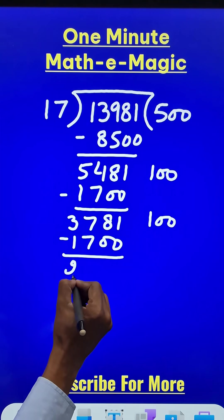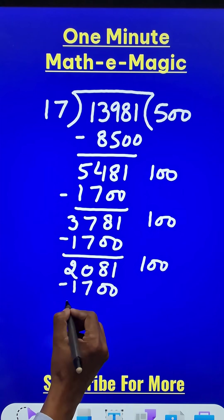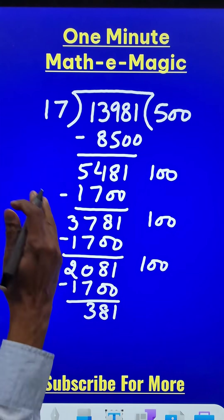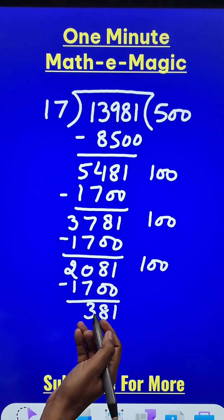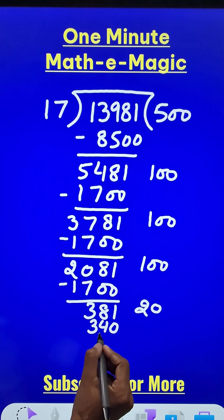You get 2081, another hundred times you get 1700. So you have 381 and now either you can do 17 twenty times to get 340 and that gives you the remainder as 41.